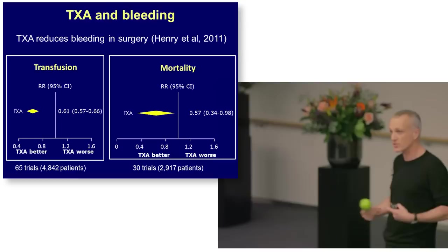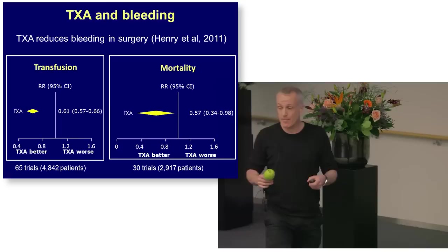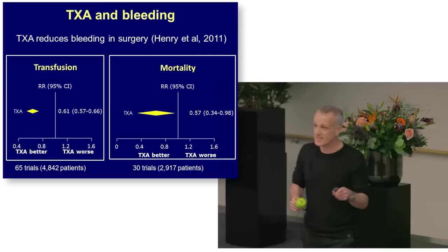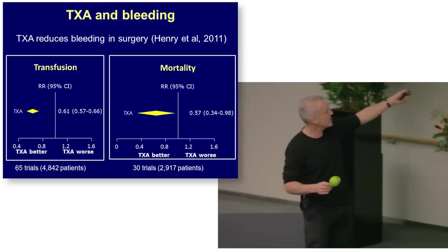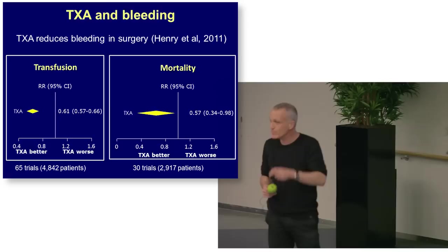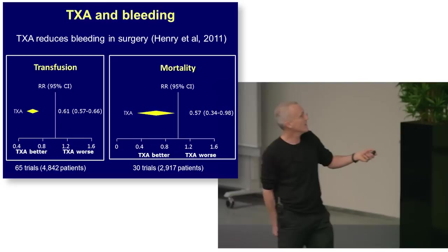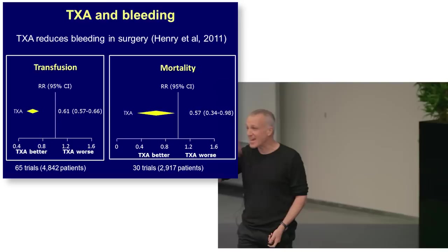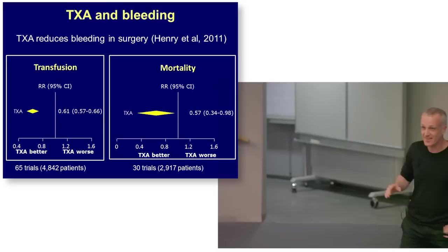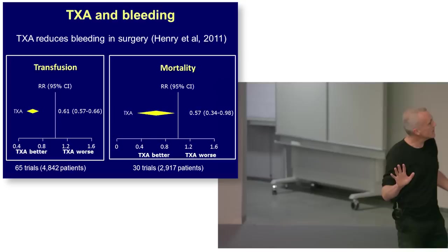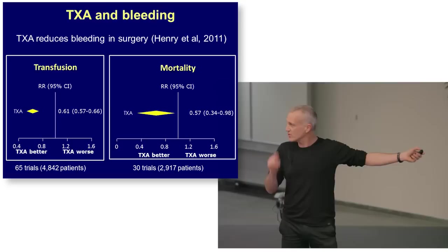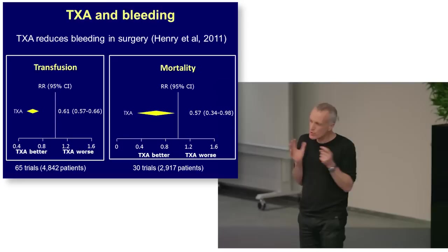When you have surgery, the bleeding and clotting and plasmin activity all goes on. They thought it would be a good idea to give patients undergoing surgery tranexamic acid to see if they bleed less. And they do, tremendously. This is data from a systematic review of randomised controlled trials of tranexamic acid administration for patients undergoing surgery. Tranexamic acid really reduces the need for blood transfusion in surgery — a tremendous result.